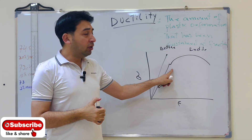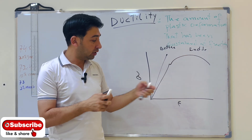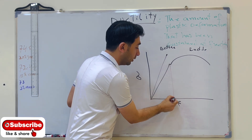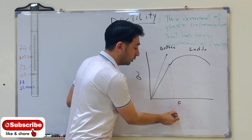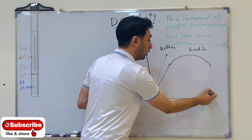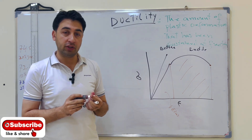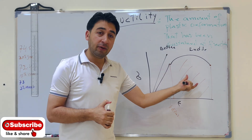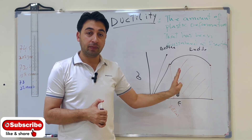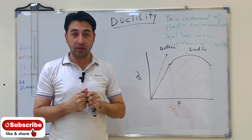In the ductile material curve, we have the elastic deformation and then the plastic deformation from one point to another — till fracture. This total range is the plastic deformation. So the amount of plastic deformation sustained at fracture — from the proportional limit till the fracture point — is known as ductility.